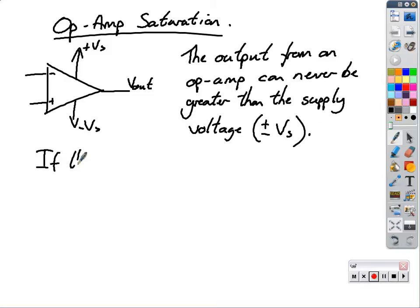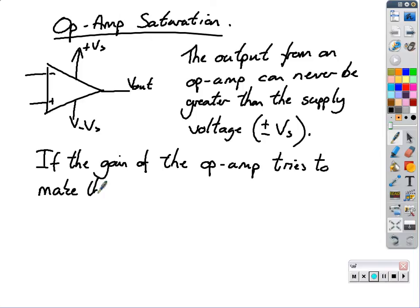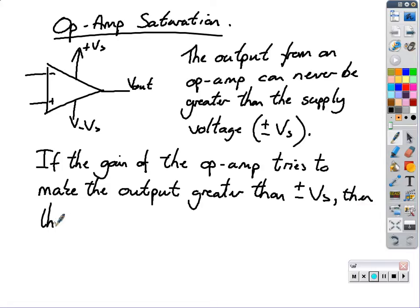If the gain of the op-amp tries to make the output greater than plus or minus Vs, then the op-amp will saturate at plus or minus Vs, which means it will rise up to the point where it would normally be.